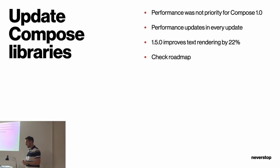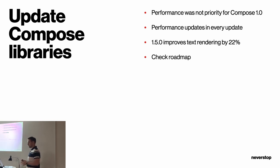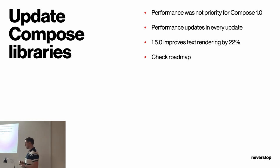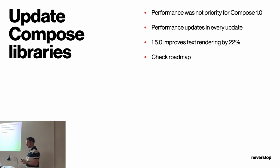Next up is updating Compose libraries. Google was quite open about saying that performance was not their priority for Compose 1.0 — they were focusing on stabilizing the APIs. Performance updates are in almost every release now. Next up is version 1.5, which improves text rendering and modifiers. They say they improved text rendering by 22% on average. Text is everywhere and it's hard to render.